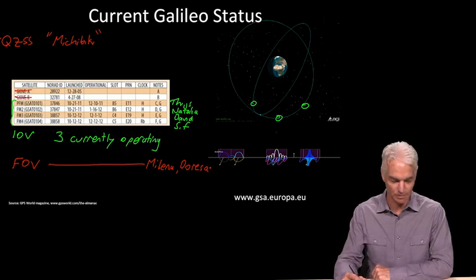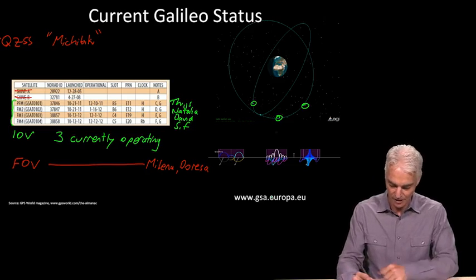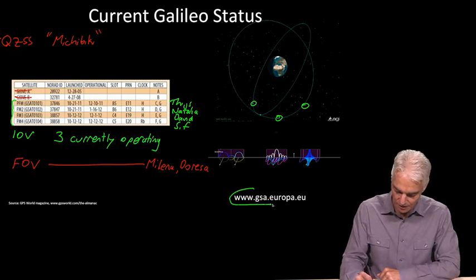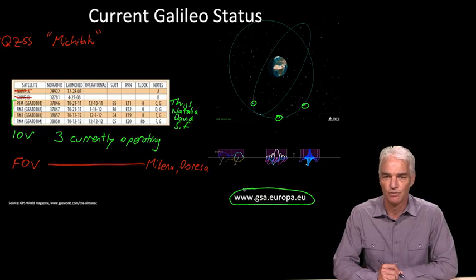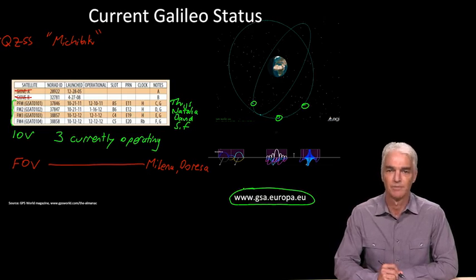If you want more information and technical information especially, then this is the European website that's responsible for Galileo and has lots of information there. Like all the systems, Galileo has an interface specification. It's the fanciest looking of all. This is what it looks like, and inside is all the specs, just like you have with GPS, GLONASS, etc.